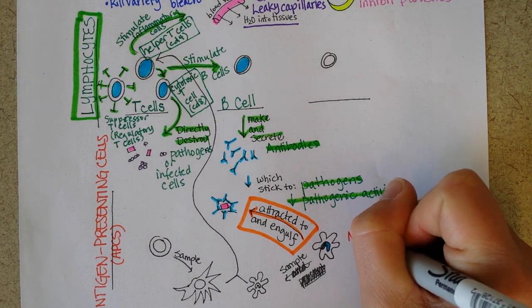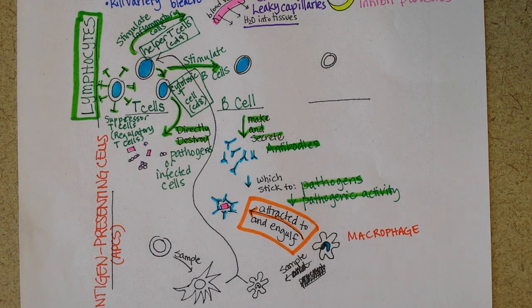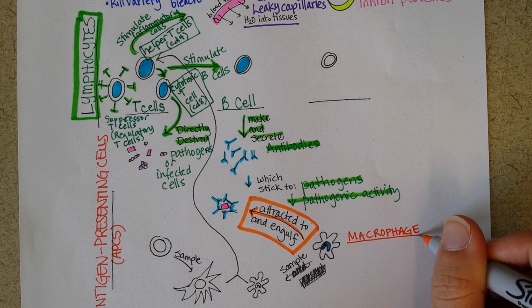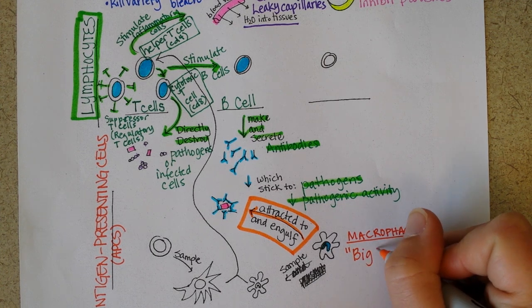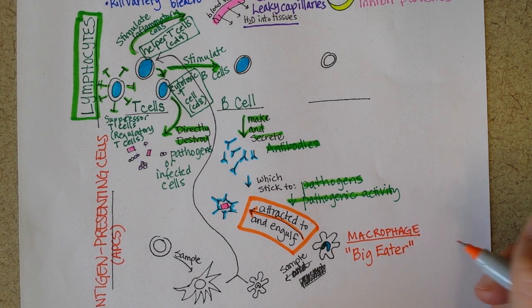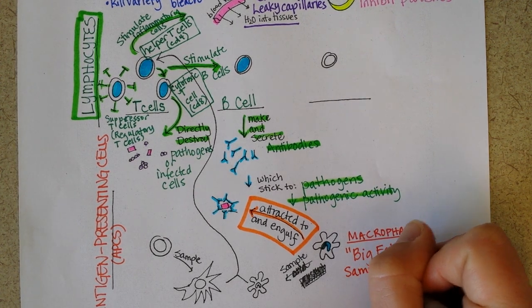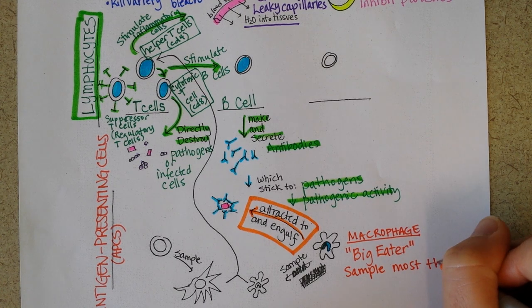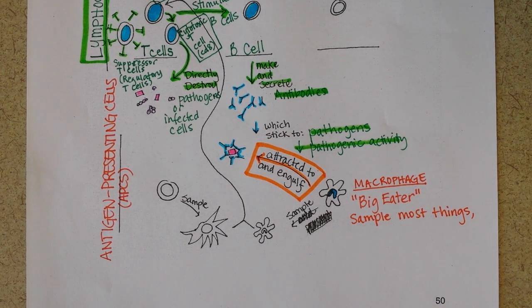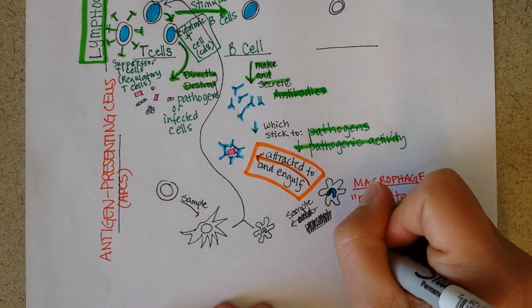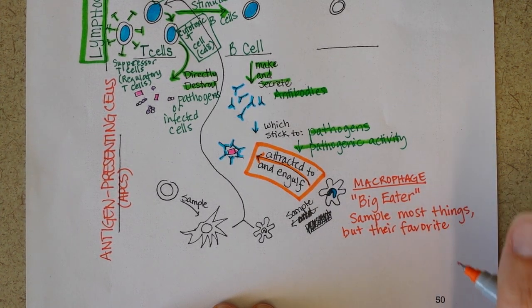So this is a macrophage, which is not a lymphocyte. It's an antigen-presenting cell as well, as you can see. Very phagocytic, meaning it likes to eat things. In fact, its name literally means big eater. And they like to sample most things that they encounter. They're kind of like a toddler. Everything they've come into contact with during the day sticks to them. But they do have a favorite food: antibody-encrusted pathogen.